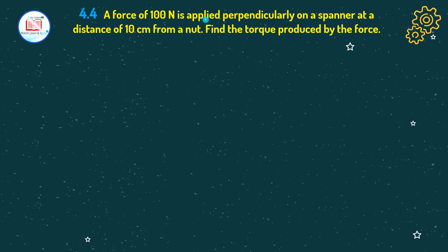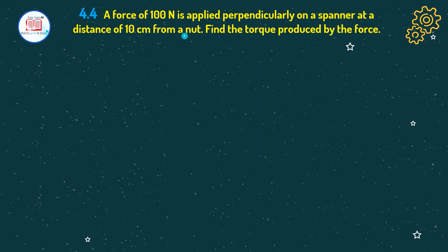The problem is: a force of 100 newton is applied perpendicularly on a spanner. The force acts perpendicularly on a spanner at a distance of 10 cm from the nut. Find the torque produced by the force.